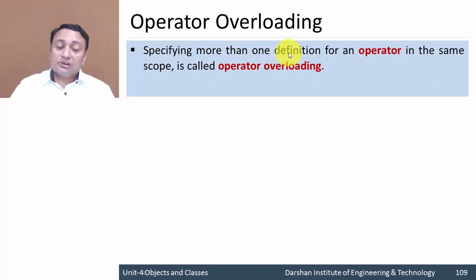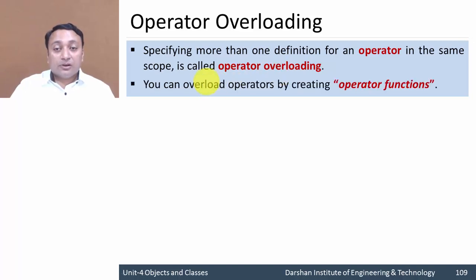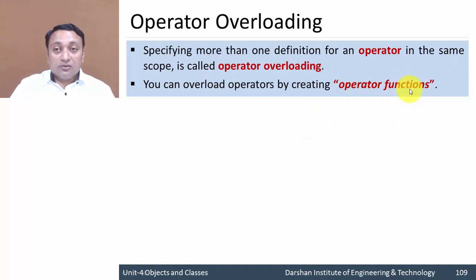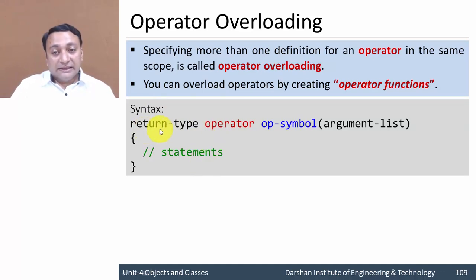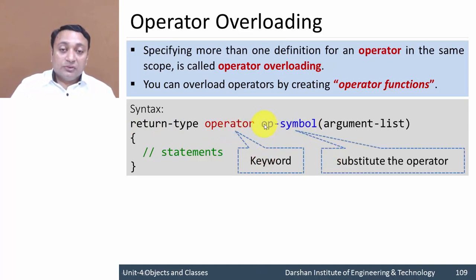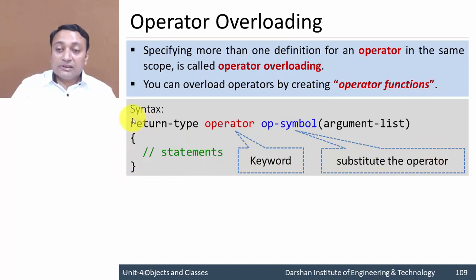Specifying more than one definition for an operator is called operator overloading. To apply operator overloading you have to create operator functions. Let us see how to write an operator function and apply the operator overloading concept in our program. Here is the syntax — it is very similar to a function definition. We will have a return type, then the keyword operator, and then the operator symbol. You can substitute any operator symbol, followed by an argument list and the body of the operator function. Instead of a function name, you write the keyword operator followed by the operator symbol.